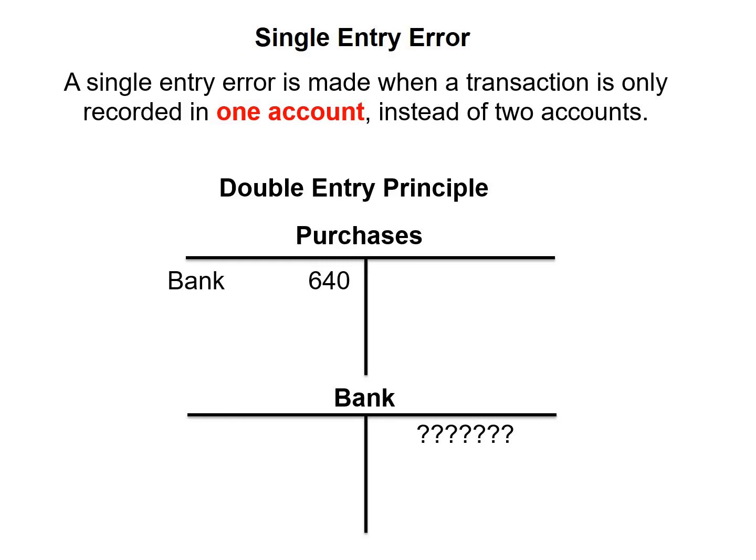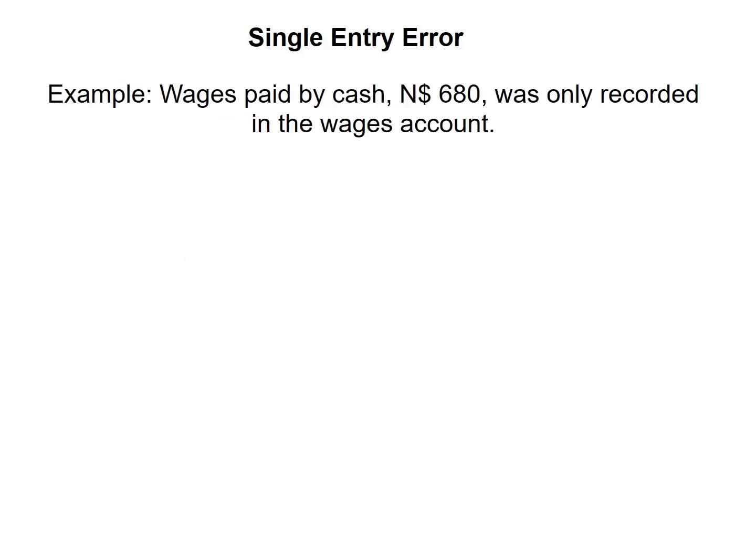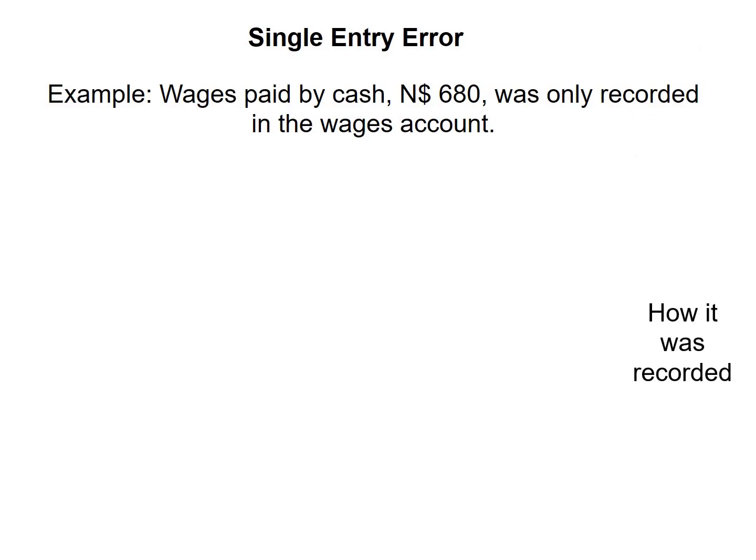Now let's have a look at an example. Wages paid by cash, 680, was only recorded in the wages account.